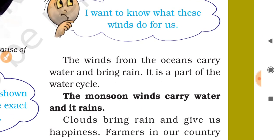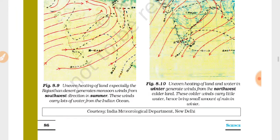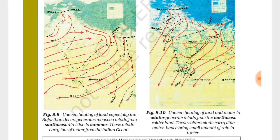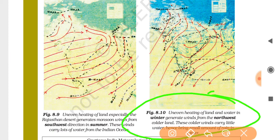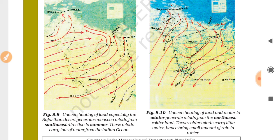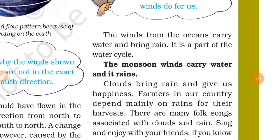Uneven heating of land, especially the Rajasthan desert, generates monsoon winds from the southeast direction in summer. Uneven heating of land and water in winter generates winds from the northwest colder land regions. These colder winds carry little water and hence bring only a small amount of rain in winter. The winds from the ocean carry water and bring rain — this is part of the water cycle.